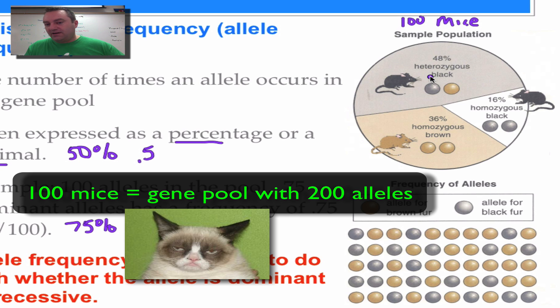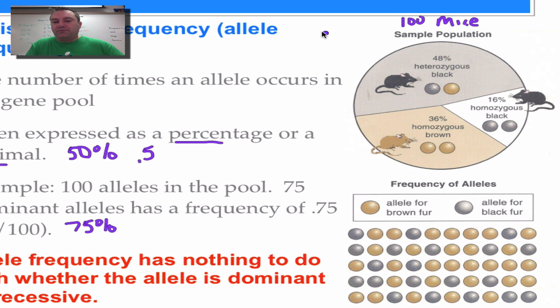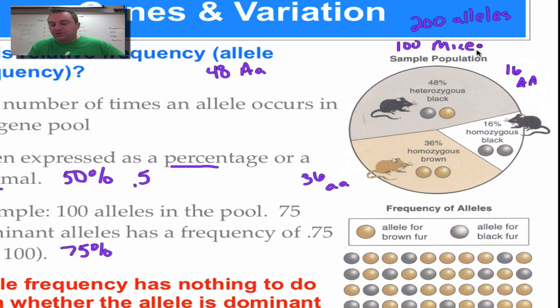Now, if 48% of 100 are heterozygous, then we have 48 mice. We'll just say that they're big A, small A. And then down here, we have 16 mice that are homozygous black. And we'll just say that's the big A's. And then down here, we have 36. So we have 36 mice that are little a, little a. So if we have 100 mice, we're going to have 200 alleles in the gene pool because every mouse has two alleles, one from mommy and one from his daddy. So 100 times two comes out to 200.